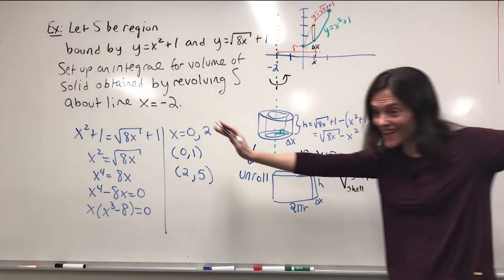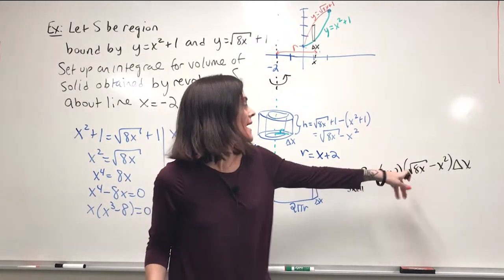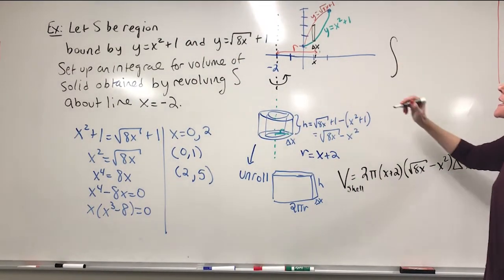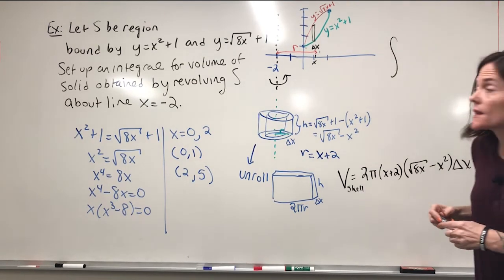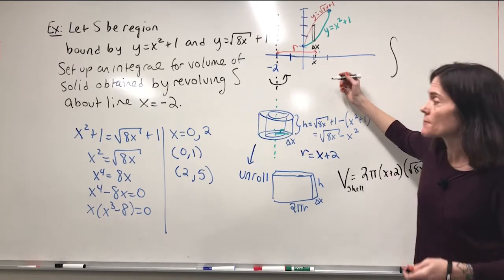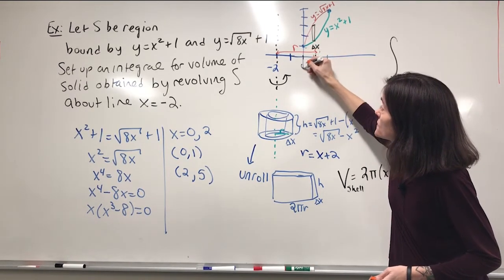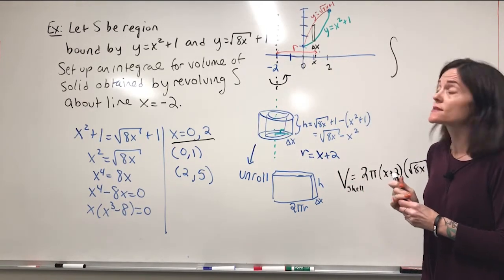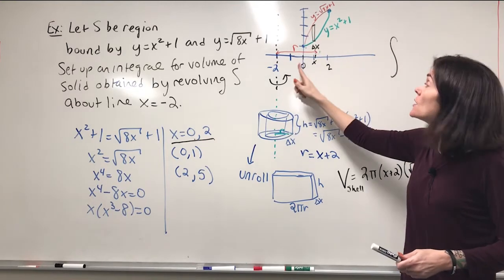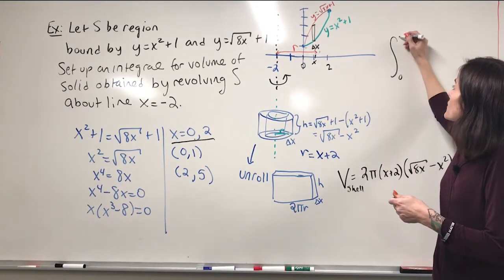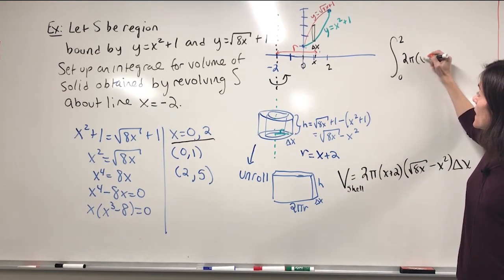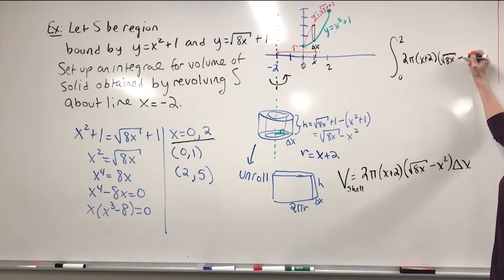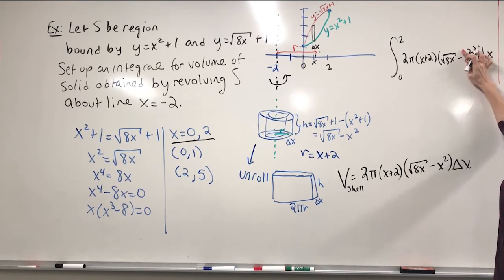Since x ranges from 0 to 2 across my region, the volume integral is ∫₀² 2π(x + 2)(√(8x) − x²) dx. You're not integrating from −2 to some larger value — just over where the representative rectangles can be, which is x from 0 to 2. This is the set-up.